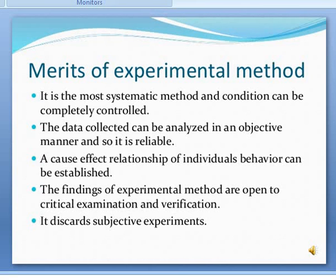Here are the merits of the experimental method. It is the most systematic method; conditions can be completely controlled and the data collected can be analyzed in an objective manner, so it is reliable. A cause and effect relationship of individuals' behavior can be established. The findings of experimental methods are open to critical examination and verification. Another merit is that it discards subjective bias.